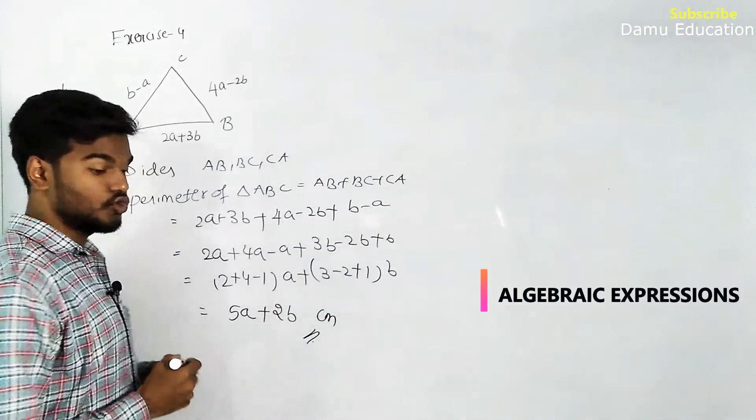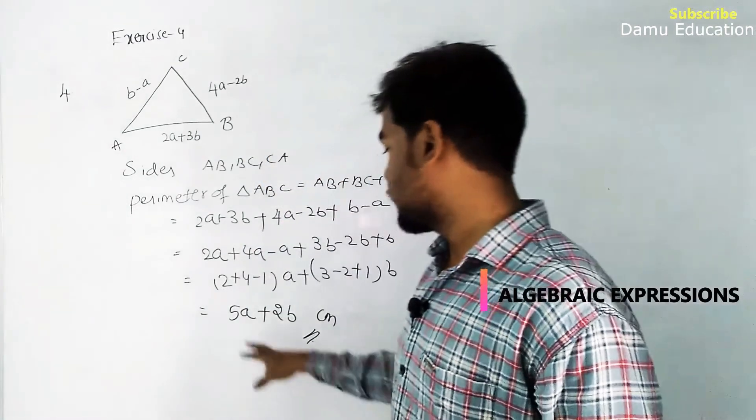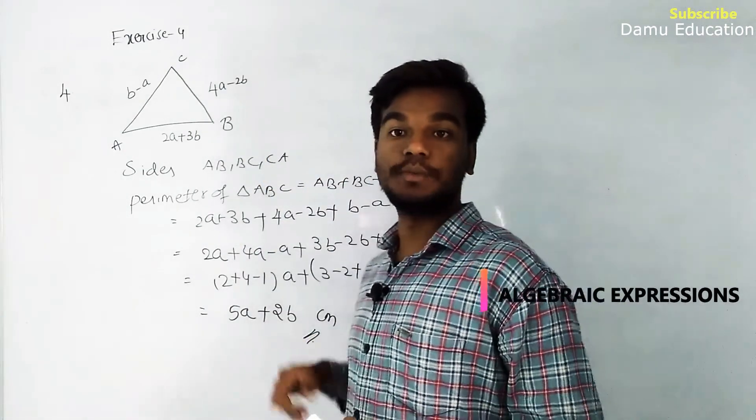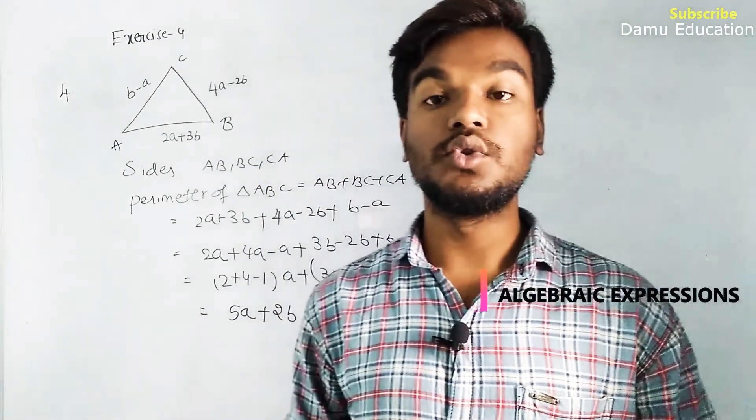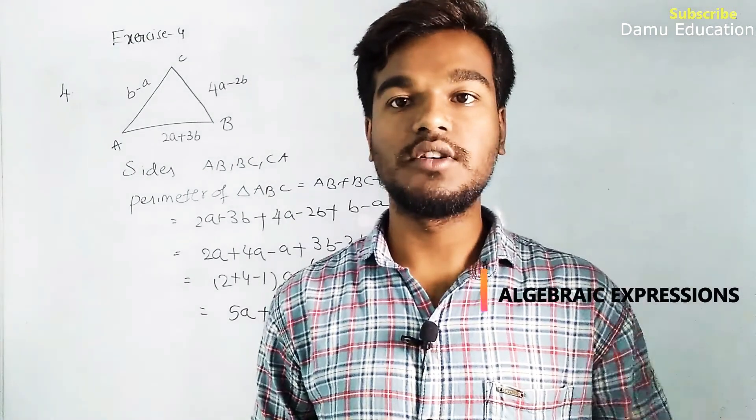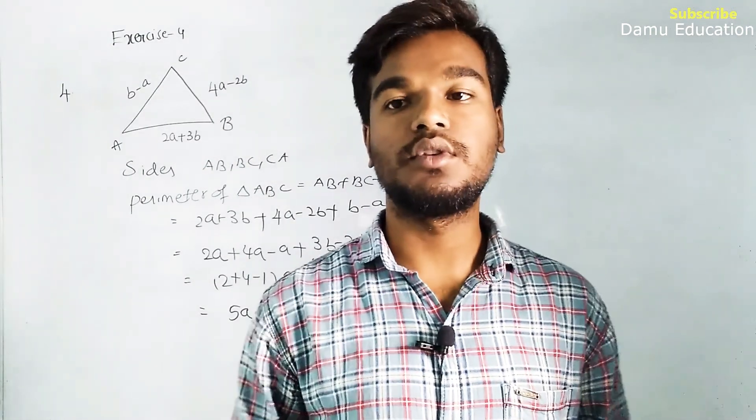So perimeter of triangle we got as 5a plus 2b. Thanks for watching this video. If you want more videos right here on YouTube you can watch and subscribe.